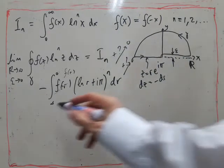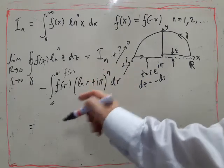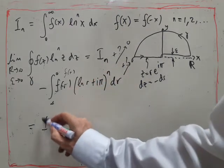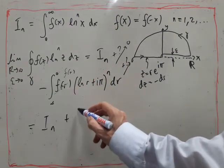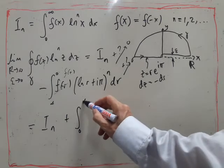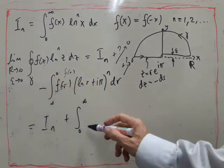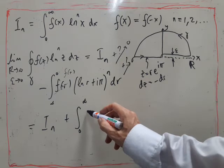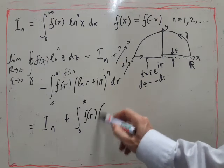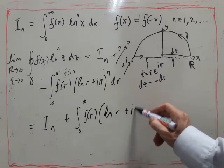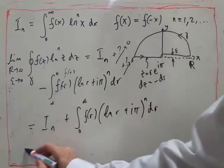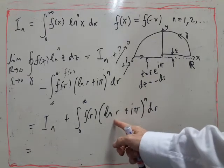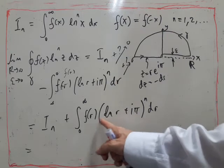So what do I get? Well, this time I've got I_n plus, using the minus to swap the limits, f of r times (log r plus i pi)^n. So you see that the first term will just be I_n from this.